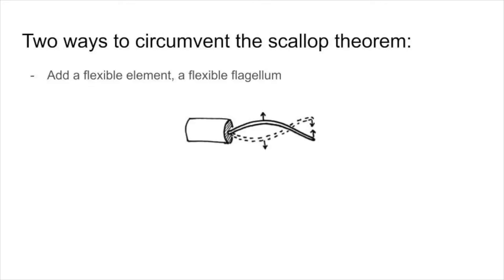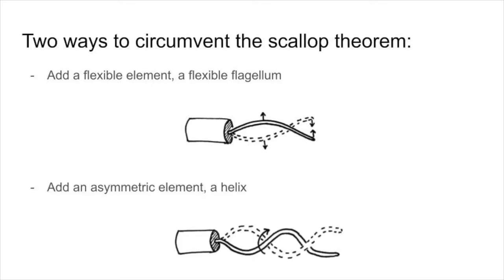The first way to accomplish this is to add flexibility to the flapping element. The second way is to use appendices with asymmetric geometry, such as a helix.